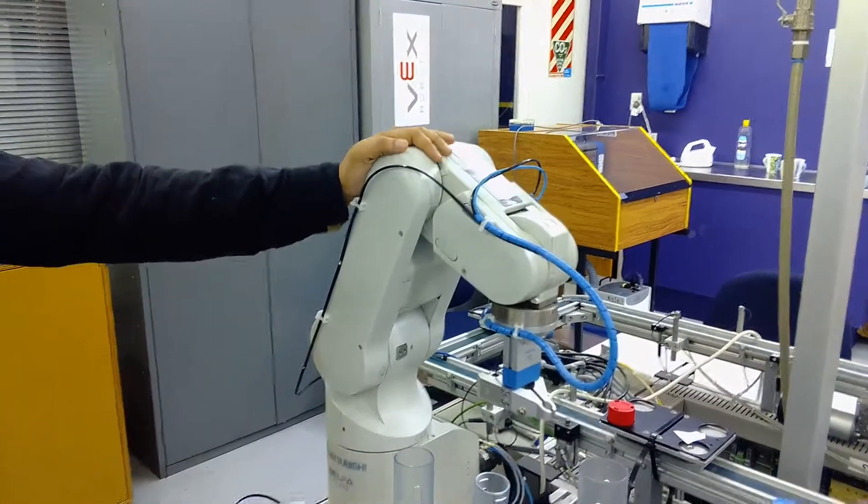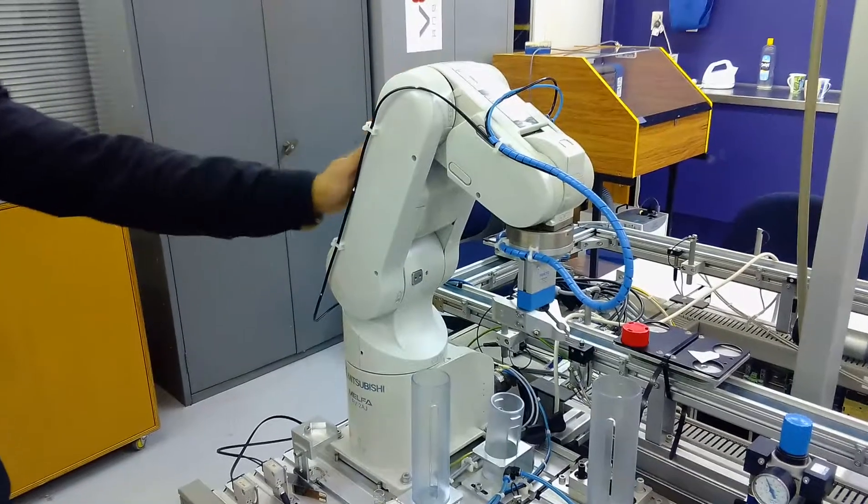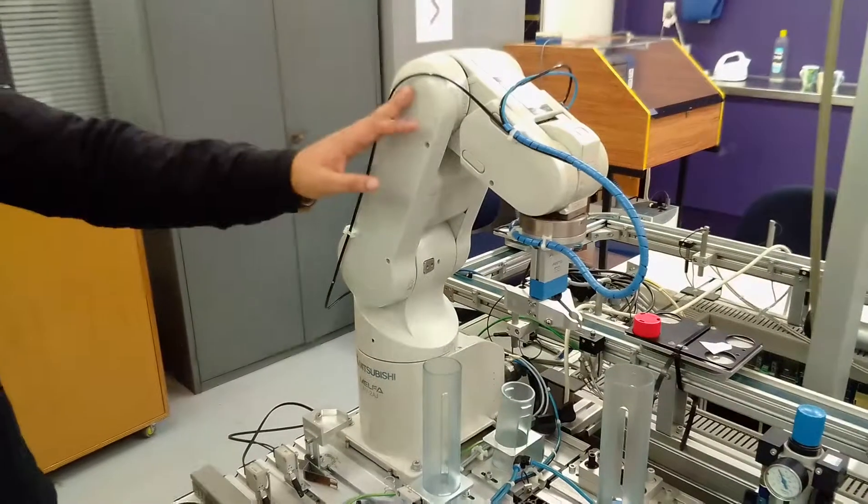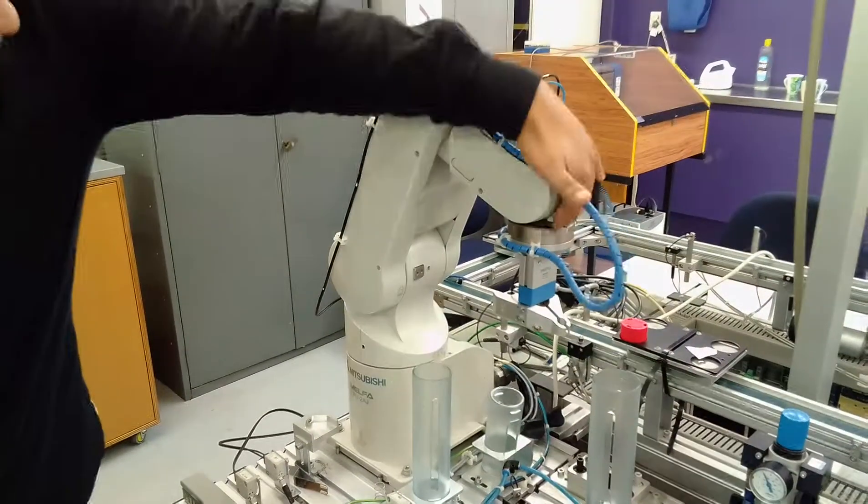So basically the robot has 5 degrees of freedom, so it has 5 joints. These are the 5 joints: joint 1, joint 2, joint 3, joint 4, and joint 5.